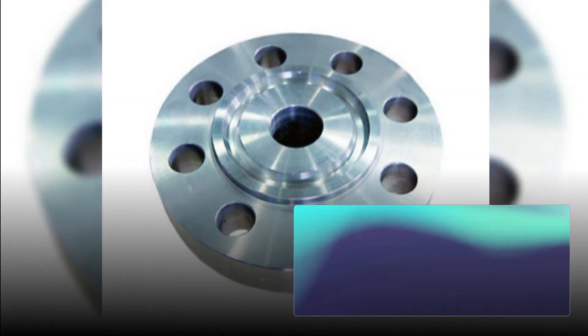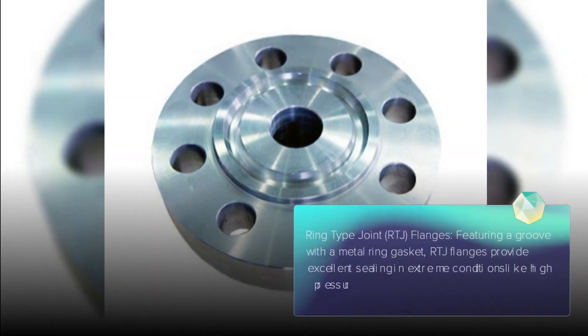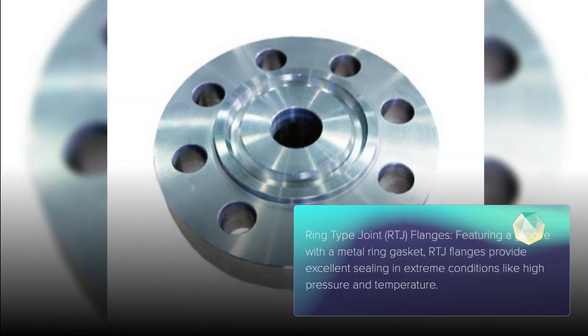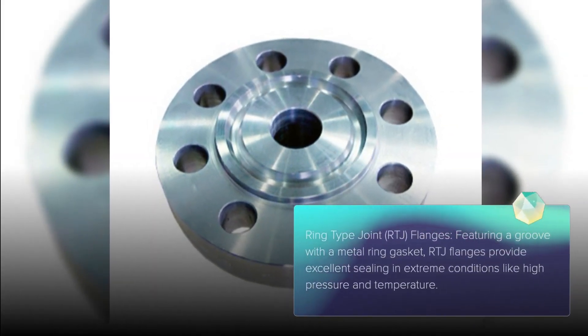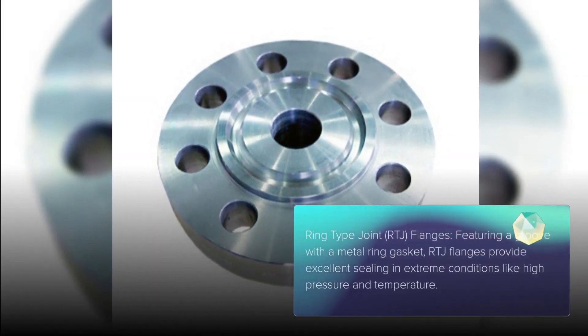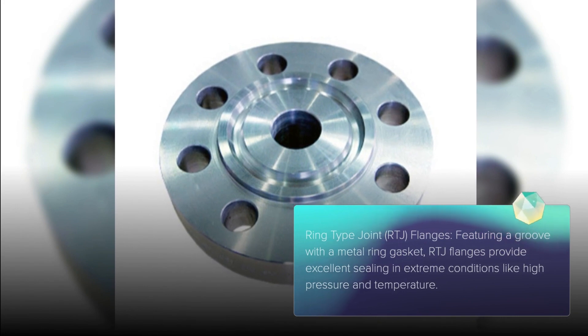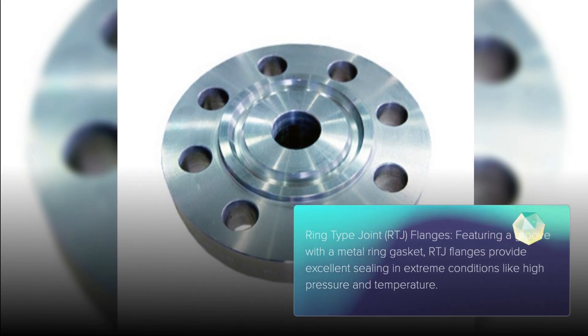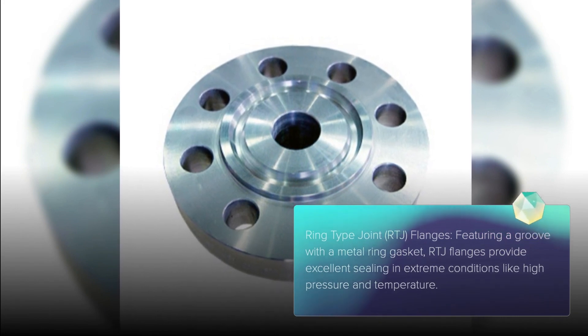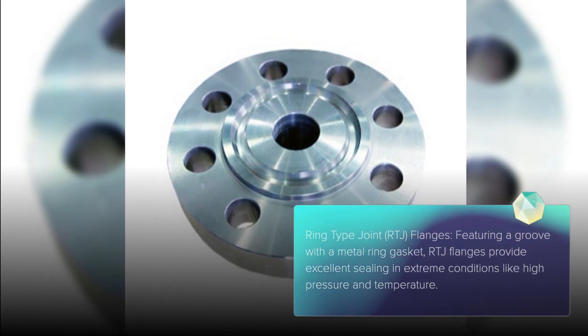Ring Type Joint (RTJ) Flanges feature a groove with a metal ring gasket, providing excellent sealing in extreme conditions like high pressure and high temperature.